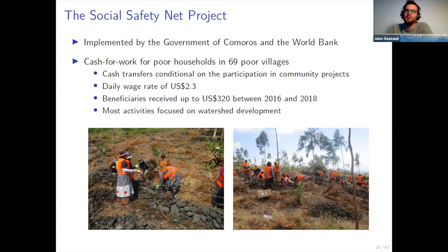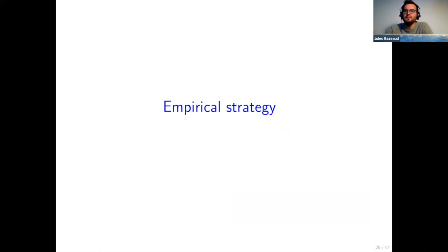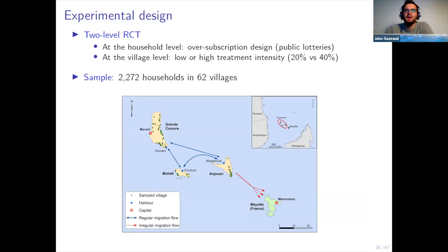The specific program in Comoros involved the government of Comoros and the World Bank. It consisted of cash-for-work opportunities targeted towards poor households in 69 villages. Cash transfers were conditional on the participation of one household member in community projects. The daily wage rate was low, and between 2016 and 2018, beneficiaries received up to 300 dollars. Most activities focused on watershed development and agricultural projects to limit erosion.